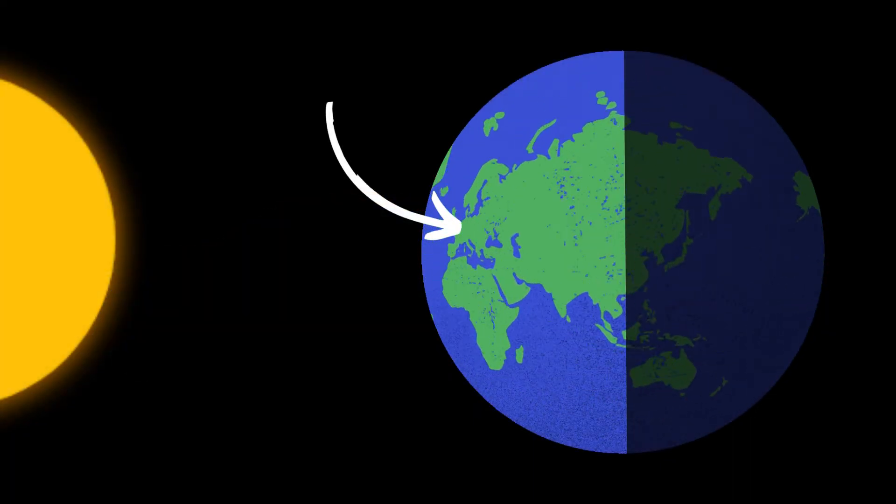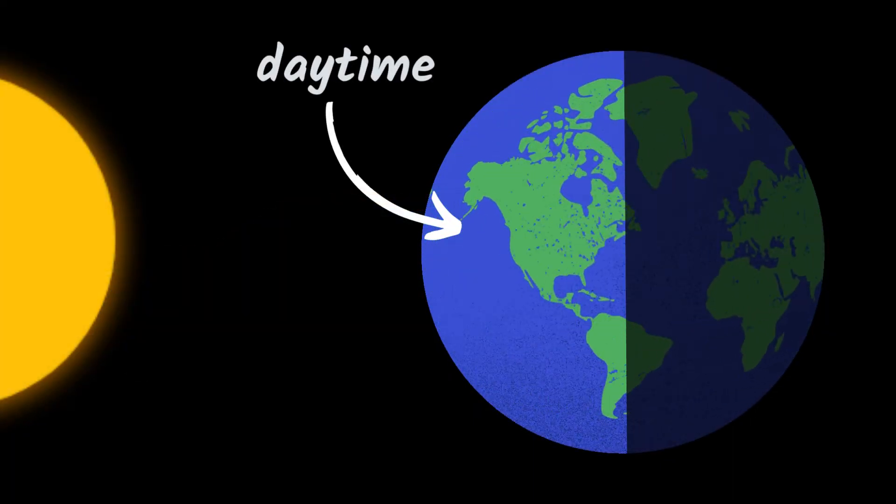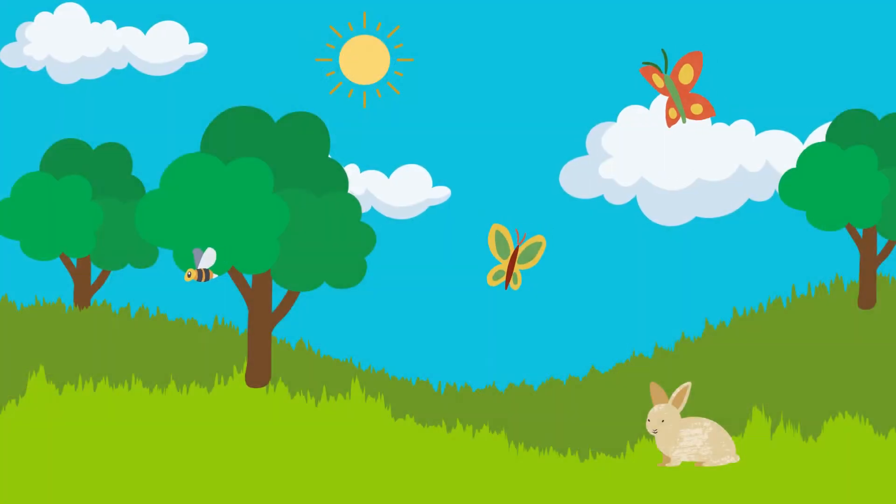When the part of the Earth you are in is turned towards the sun, it's daytime. The sun has risen in the sky and it's light and warm.